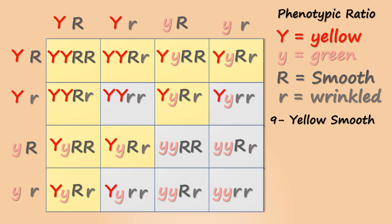The gametes with at least one capital Y and both small r will show yellow wrinkled phenotypes. The capital Y will give the yellow phenotypic character and since capital R is absent, we will get the wrinkled phenotype.